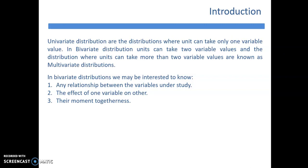Bivariate distribution is one in which we have more than one variable together under study. For example, marks in English, marks in stats, and marks in physics — three different series X, Y, and Z — make it multivariate data. Similarly, a stock's opening price, closing price, and traded quantity represent three different variables for the same stock, making it a multivariate series.